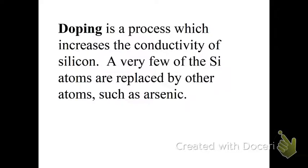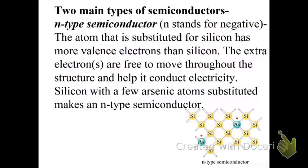Doping is a process which increases the conductivity of silicon. Very few of the silicon atoms are replaced by other atoms, such as arsenic, which is another semiconductor, which increases that conductivity. That's how they make our electronics work faster and better as we get through technology.